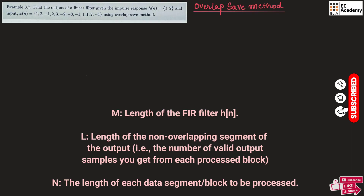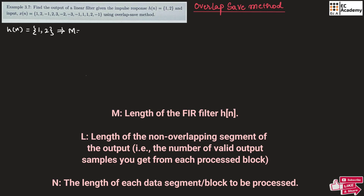You can observe that the value of N is not given. The impulse response h(n) is given, which is {1, 2}. So the length of h(n) is M equal to 2. Since N is not given, we can find the value of N by using the formula 2 to the power of M. Substituting M, we get 2 to the power of 2, so N is equal to 4.